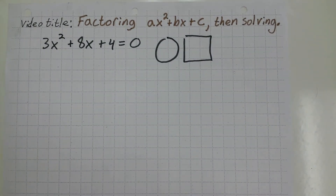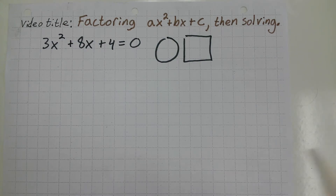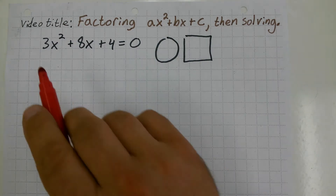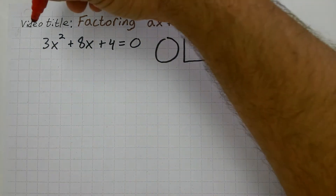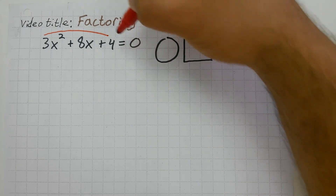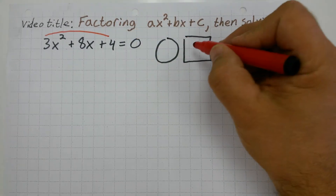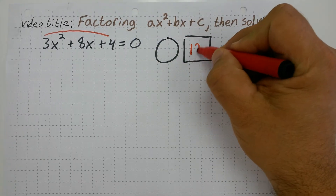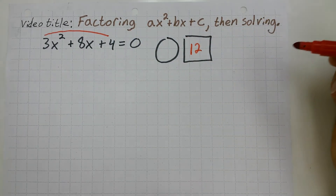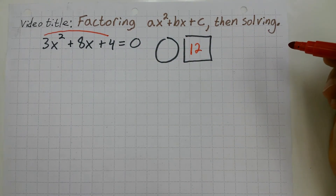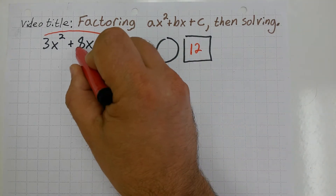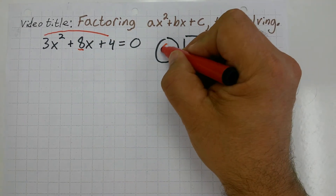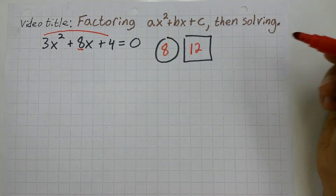What we're going to do is multiply A and C. So if I do A times C, that gives me 12, and I'm going to place that in a box to the right. The middle term, 8, is going to go in my circle.